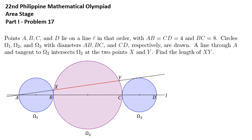Circles omega 1, omega 2, and omega 3, with diameters AB, BC, and CD respectively, are drawn. A line through A and tangent to omega 3 intersects omega 2 at the two points X and Y. Find the length of XY.